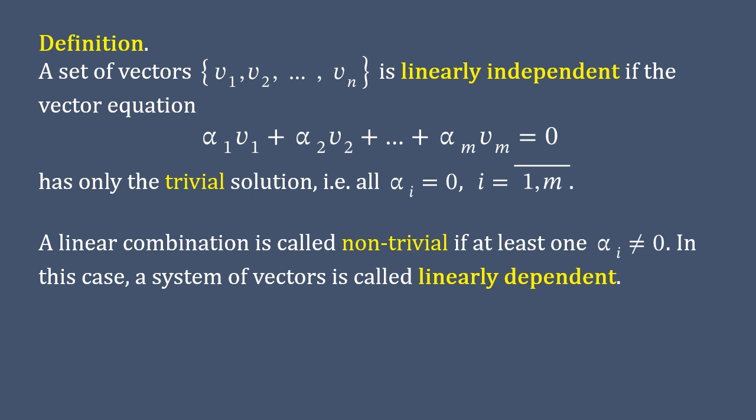However, if at least one of the coefficients is not equal to zero, it implies that a linear combination is called non-trivial and vectors are linearly dependent.